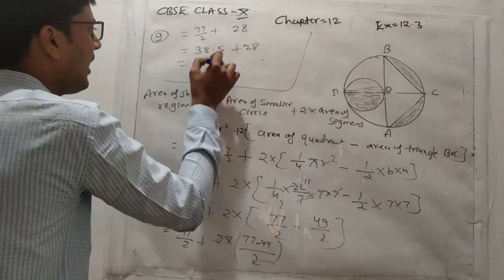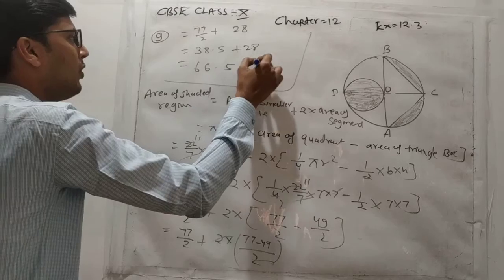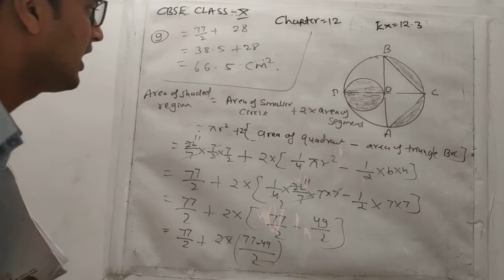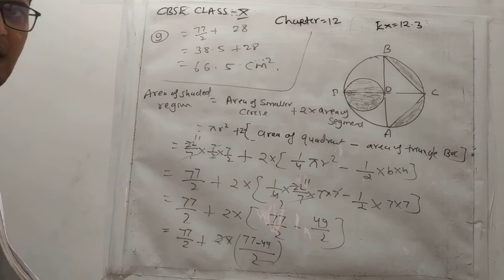So if we sum this, 8 plus 8 is 16, 6, 1 remaining, 5, 1, 6. So 66.5 cm square is the area of this shaded region. So this is your question number 9. Is that clear?